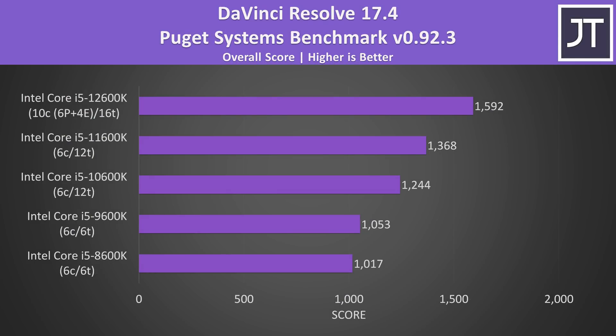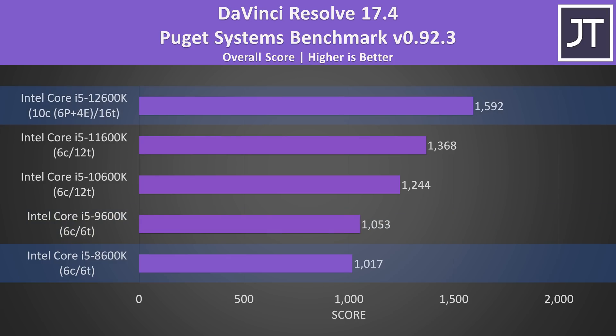The gap was a little smaller in DaVinci Resolve, where the 12600K was scoring 16% higher than the 11600K. Like many other tests, only small improvements going from 8th to 9th gen, but the difference between 8th and 12th gen was 57%, so much larger improvements to be had if you haven't upgraded for a while.